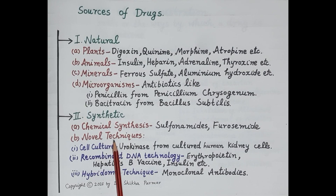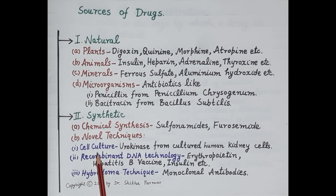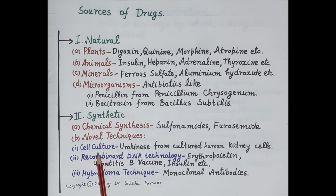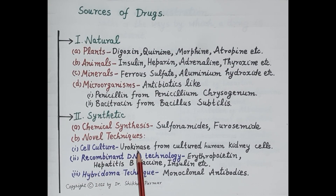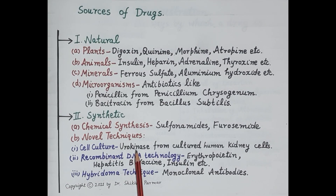Apart from routine chemical synthesis, there are some new novel techniques by which drugs are synthesized. These include cell culture, where cells are grown under controlled conditions in laboratories. For example, urokinase is a thrombolytic drug obtained by cell culture. It breaks the thrombus or clots produced in the blood.